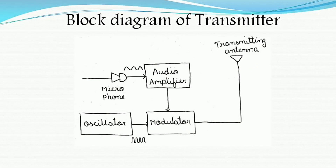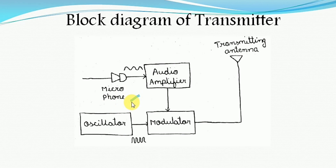The first block involved in the transmitter section is a microphone. A microphone is a device which converts sound waves into electrical waves. In general we can say that this microphone will act as an input transducer. The transducer's purpose is to convert one form of energy to another form, and since this transducer is used in the transmitter part we can say it is an input transducer. Whenever a person speaks, the varying air pressure on the microphone produces an electrical signal corresponding to the original signal. So finally the output of a microphone is a low strength electrical signal or a low strength audio signal.